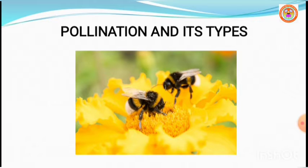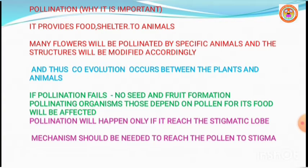Pollination is a wonderful mechanism which provides food and shelter for the pollinating elements. We know that many plants are pollinated by a particular animal species, and the flowers are modified accordingly. So there exists a co-evolution between plants and animals, which makes pollination effective.